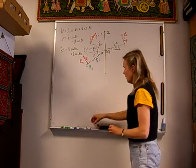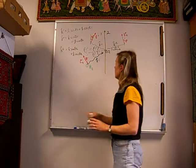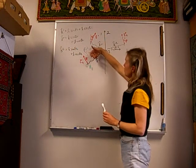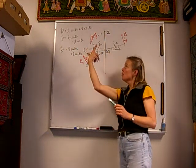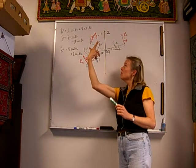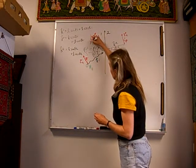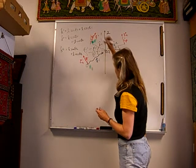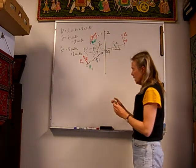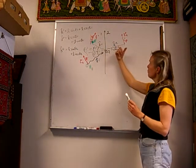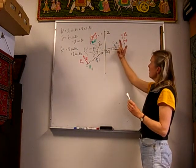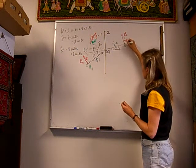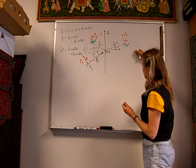Now let's look at the magnetic field for each one of these. For the reflected case, put your thumb in the direction of propagation and your finger in the direction of E — the magnetic field has switched so that it goes into the board. On the transmitted side, direction of propagation, electric field — magnetic field is out of the board. So here is H transmitted.